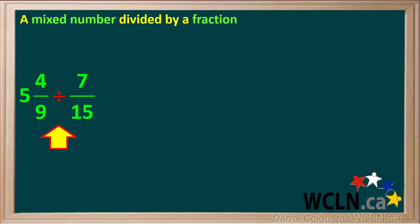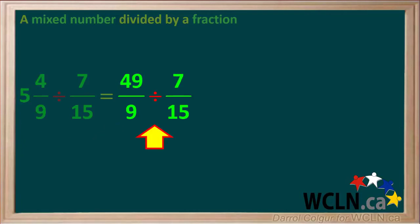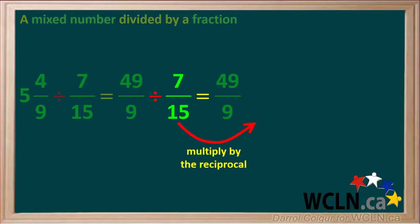Now we'll go over an example of a mixed number divided by a fraction. Our example is the mixed number 5 and 4 ninths divided by the fraction 7 fifteenths. We'll start by converting 5 and 4 ninths to an improper fraction. The denominator will be 9, and the numerator will be 5 times 9, which is 45 plus 4, which is equal to 49. So our problem is 49 over 9 divided by 7 over 15. Dividing by a fraction is the same as multiplying by its reciprocal, which is 15 over 7.